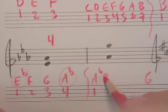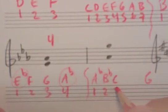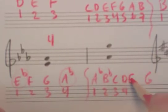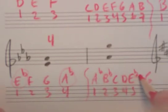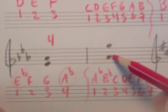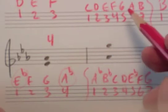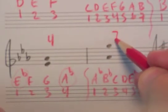So A-flat is 1, B-flat is 2, C is 3, D is 4, E-flat is 5, and F is 6, and G is 7. So 1, 2, 3, 4, 5, 6, 7. So A-flat to G is some sort of seventh.